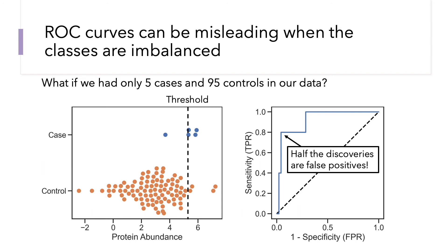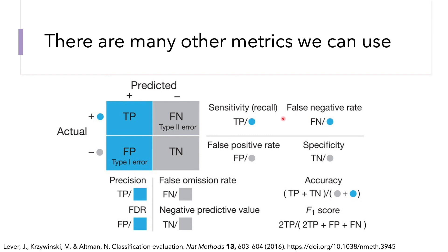There are many other metrics we can use to evaluate classification performance. I would highly recommend looking at this article in Nature Methods from their Points of Significance series about classification evaluation. In particular, you'll want to look at precision-recall curves. Thank you for listening, and I hope you enjoy more videos in our Statistics for Proteomics series.